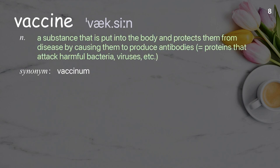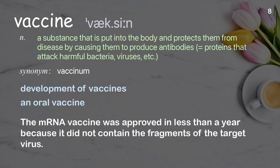Vaccine: A substance that is put into the body and protects them from disease by causing them to produce antibodies — proteins that attack harmful bacteria, viruses, etc. Examples: Development of vaccines. An oral vaccine. The mRNA vaccine was approved in less than a year because it did not contain the fragments of the target virus.